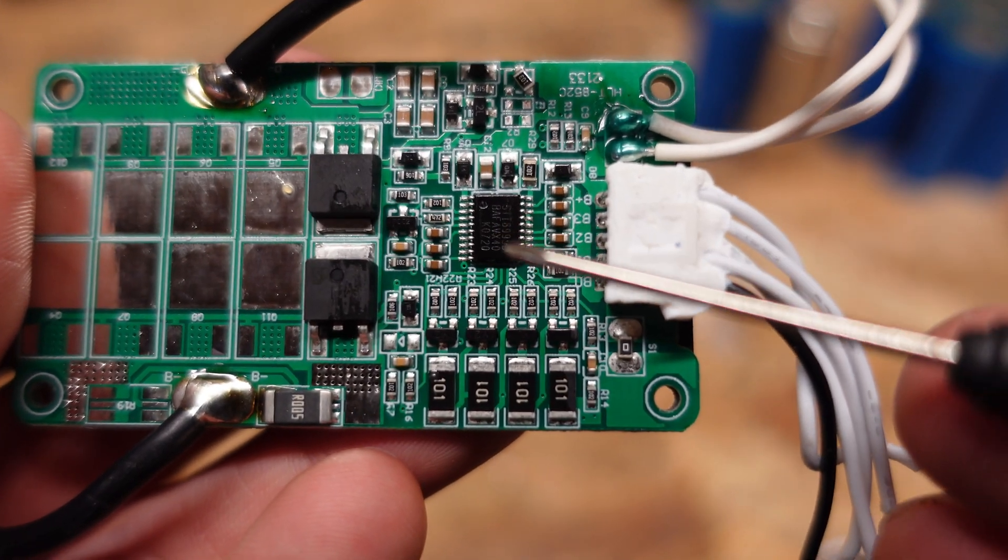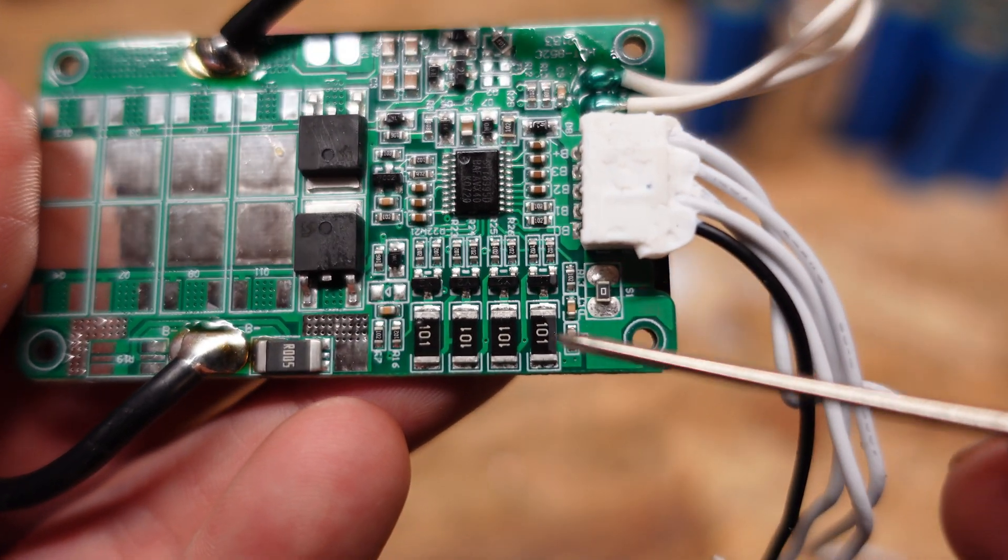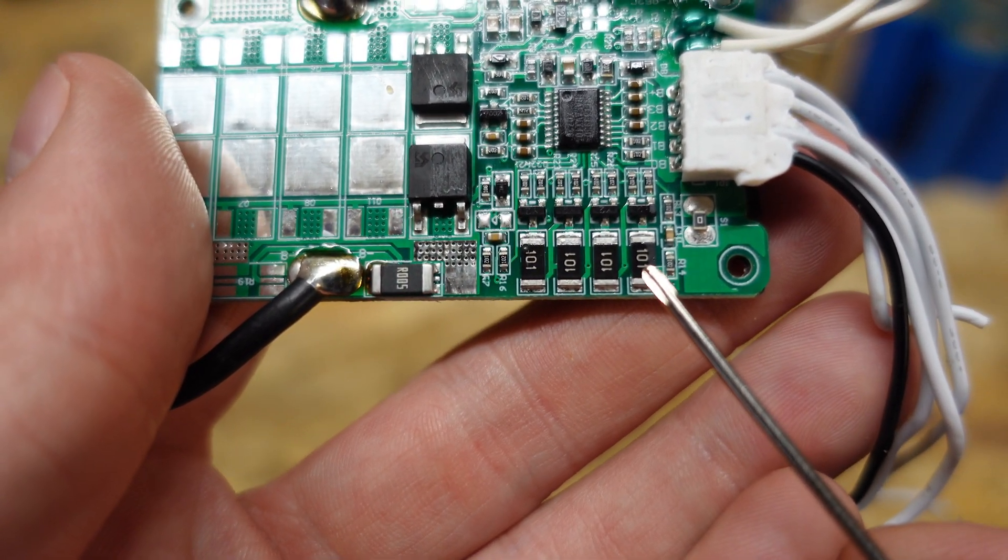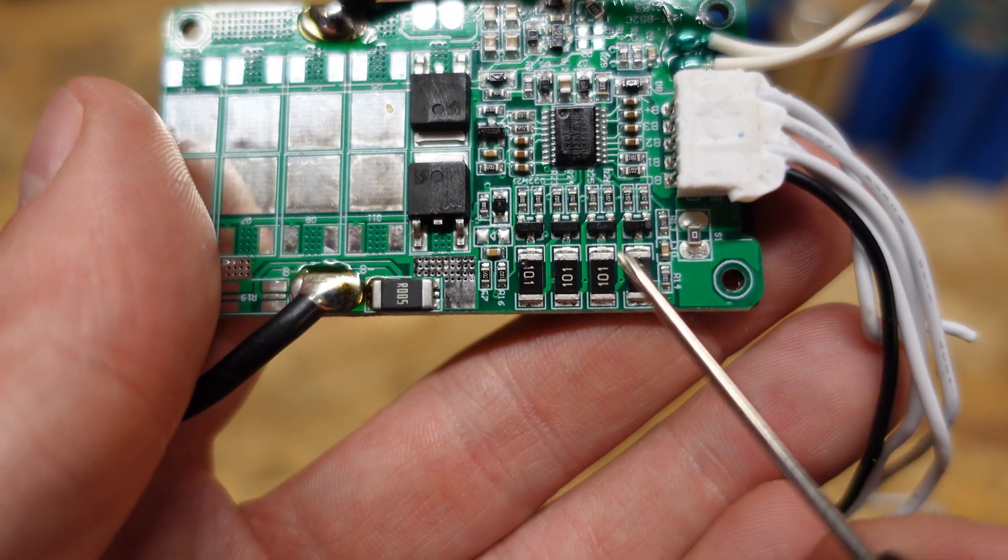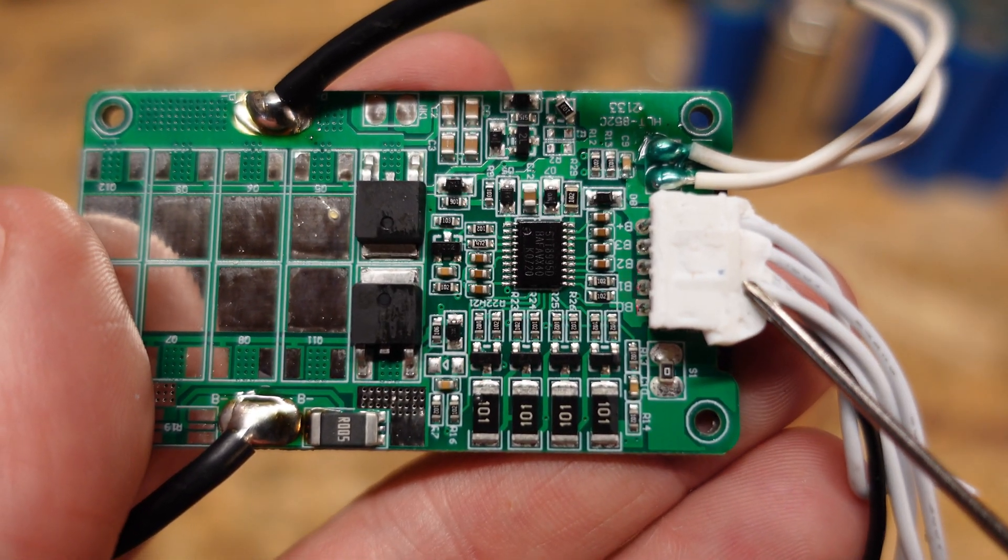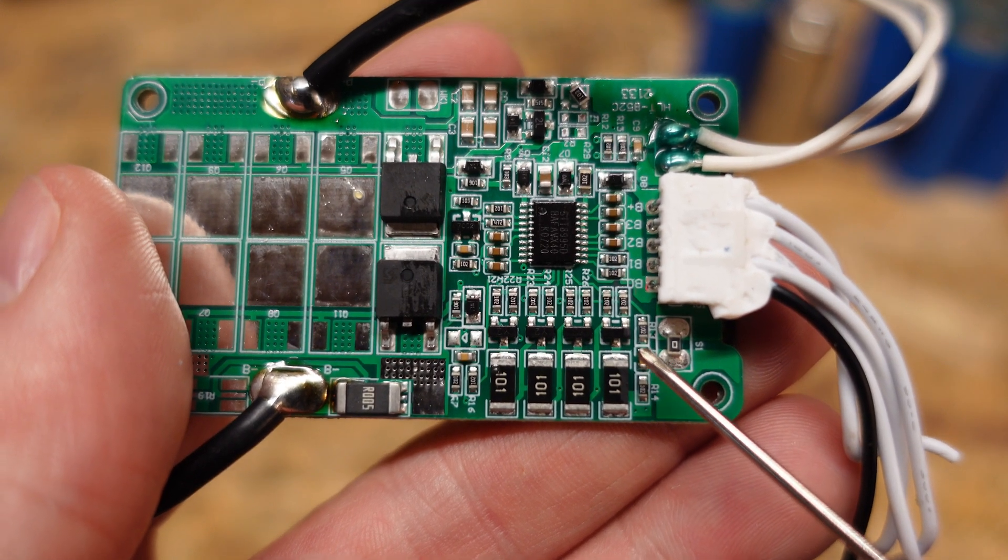And on the right hand side here we can see this chip is going to be the main control circuit. We have four resistors here along the bottom. These are going to be the passive balancing resistors and then four transistors to control these resistors.